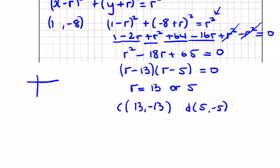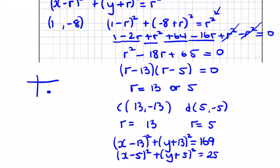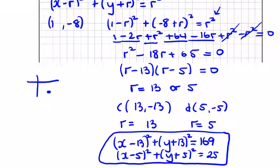We're in this sector here, positive negative, so the radius will be 13 and the radius will be 5. So x minus 13 squared plus y plus 13 squared equals 13 squared, and x minus 5 squared plus y plus 5 squared equals 5 squared, 25, are the equations of the two circles. I hope you practice them.